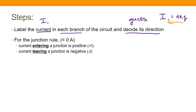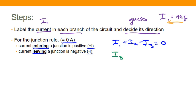From there, we can pick a junction, and all the current flowing into and out of that junction has to add up to zero. Anything entering the junction gets a positive current; anything leaving is negative. We have to be careful — we can't use the junction rule for every junction because it won't produce independent equations. For example, one junction might give I1 + I2 − I3 = 0, and the next gives I3 − I1 − I2 = 0. Those aren't independent — one is just the other times a minus sign.